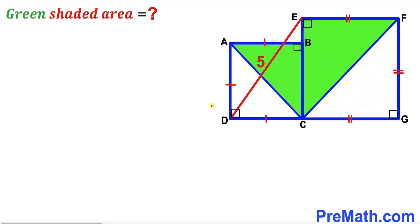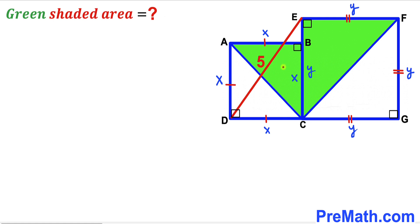Here's our very first step. Let's focus on the smaller square ABCD and label its side length as X, since all side lengths are equal — so each side is X. Now let's focus on the other square EFGC and label its side length as Y, so each side is Y as well.